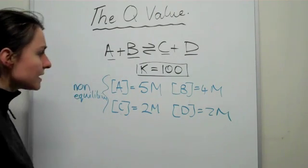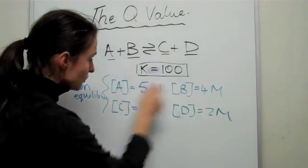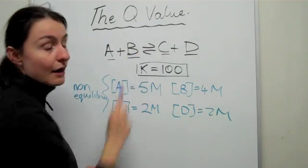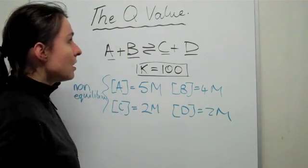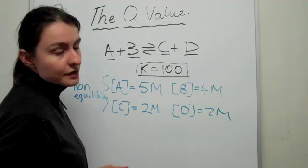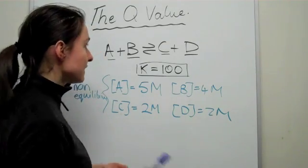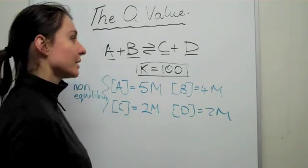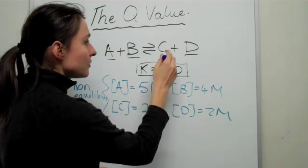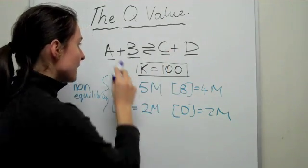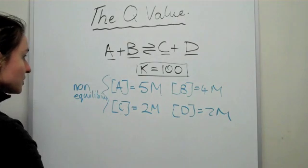So what ends up happening is we need to use this information to figure out this value known as the Q value. Now, the Q value is no different in the way you calculate it as the K value. It's essentially the exact same thing, the exact same method of calculating in the sense that you take your products and you divide them by your reactants.